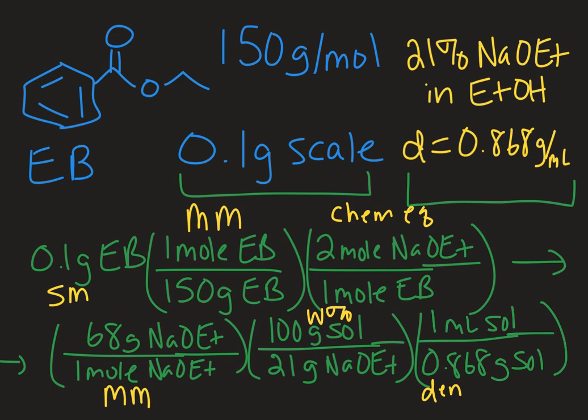So the whole way along, you're sort of crossing out the thing before, right? You go from grams of ethyl benzoate to moles of ethyl benzoate. Then you go from moles of ethyl benzoate to moles of sodium ethoxide. Then moles of sodium ethoxide to grams of sodium ethoxide on the top there. From grams of sodium ethoxide to the grams of the solution that you have access to. And then because it's a liquid, grams of solution to the milliliters of solution.